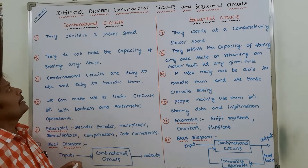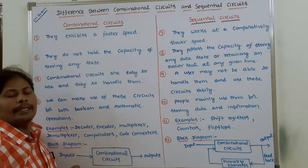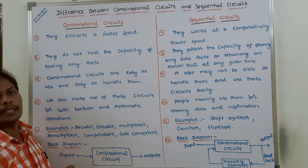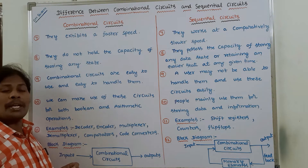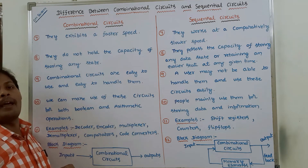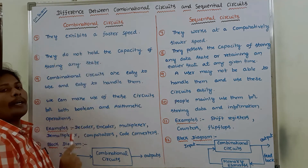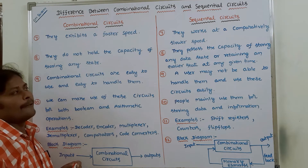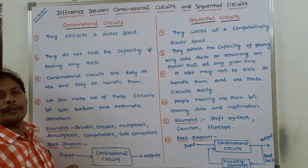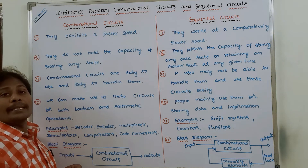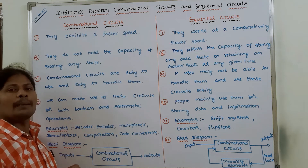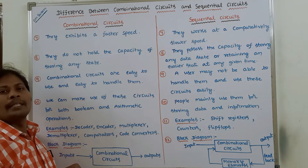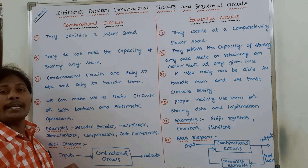Seventh point: combinational circuits exhibit a faster speed. The output depends only on the present inputs, so the operation can be done in combinational circuits very fast. Hence, combinational circuits operate at a faster speed. Whereas sequential circuits work at a comparatively slower speed, because the output depends not only on the present inputs but also on the past inputs. Because of that reason, sequential circuits are operated at a slower speed.